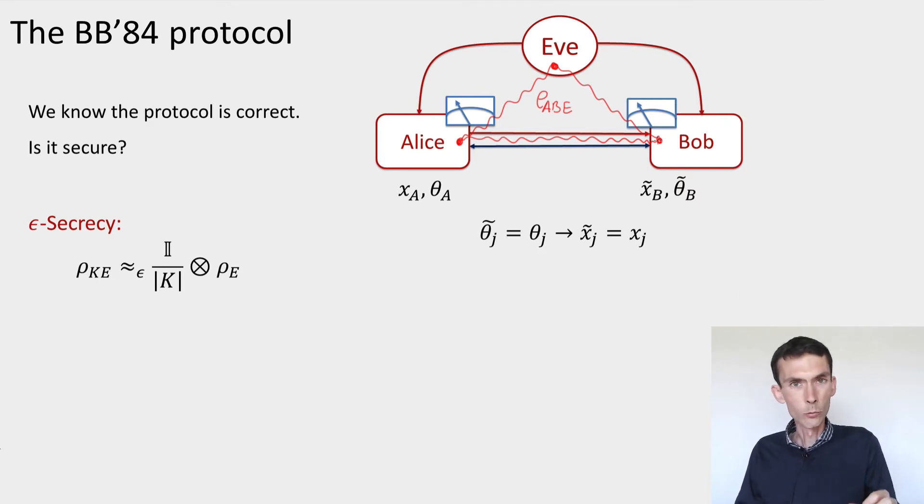Then the whole protocol runs, so Alice and Bob make their choice of basis, their measurements, they check that the outcomes agree, and then they perform the steps of information reconciliation and privacy amplification.